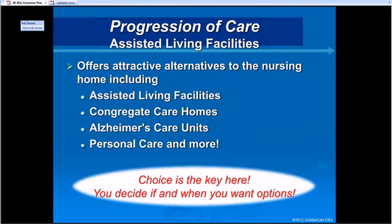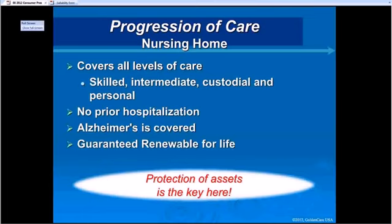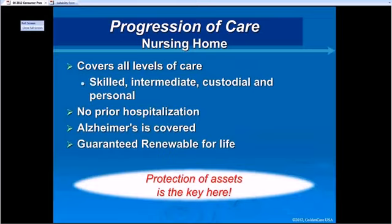The policy covers any type of alternative — assisted living, congregate care, Alzheimer's units, and more. And if, God forbid, you end up in a nursing home, there's no reason to lose everything you built. We pay for all levels of care: skilled, intermediate, custodial, no prior hospitalization required. Alzheimer's is covered, and our policies are guaranteed renewable for life — as long as you pay the premiums, they can never take it away because of your health. There is a potential for a rate increase in the future, but every health insurance policy has that. Long-term care has been fairly good in that area — most plans have had one, maybe two or three increases maximum during the client's lifetime.